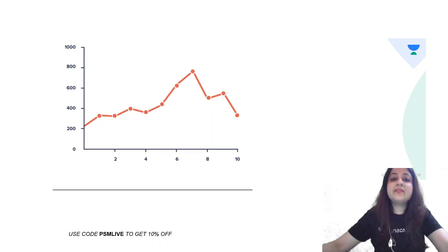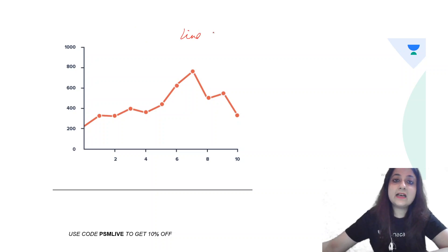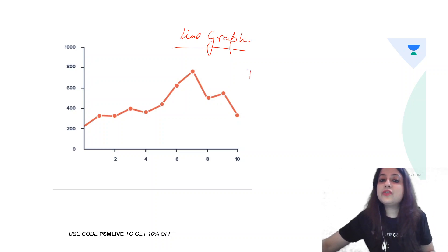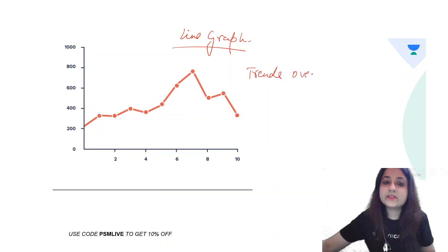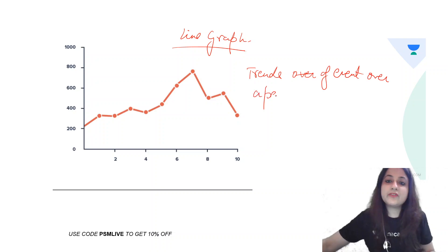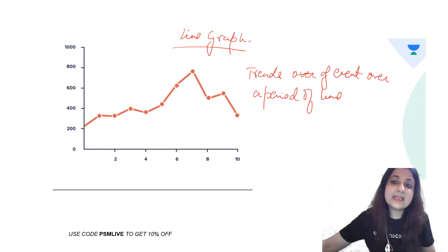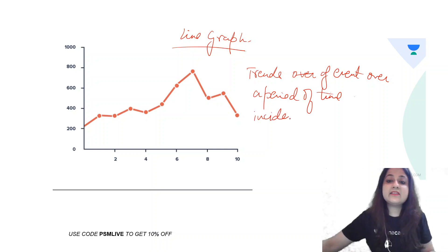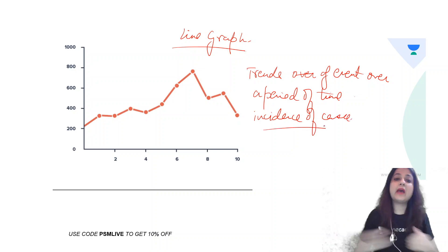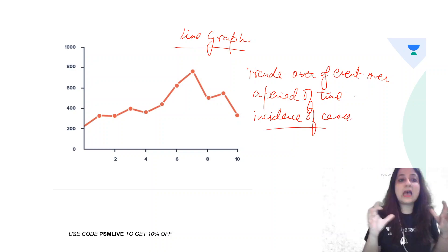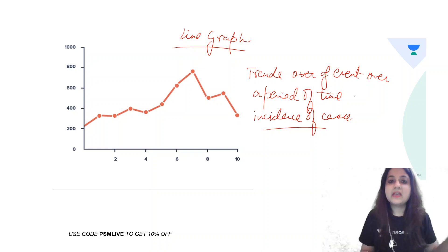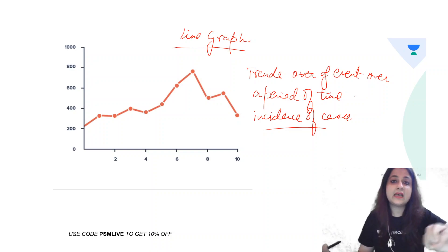This statistical diagram is a line graph. A line graph is used to represent the trends of an event over a period of time. It represents the incidence of cases — for example, how many new cases of COVID occurred from January to July 2021, how many cases in January, how many in February, and so on.